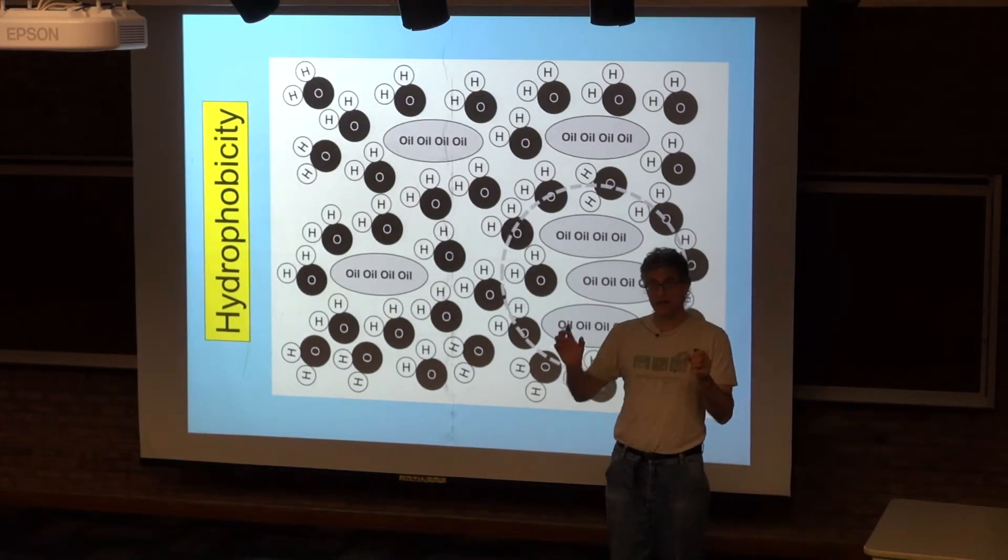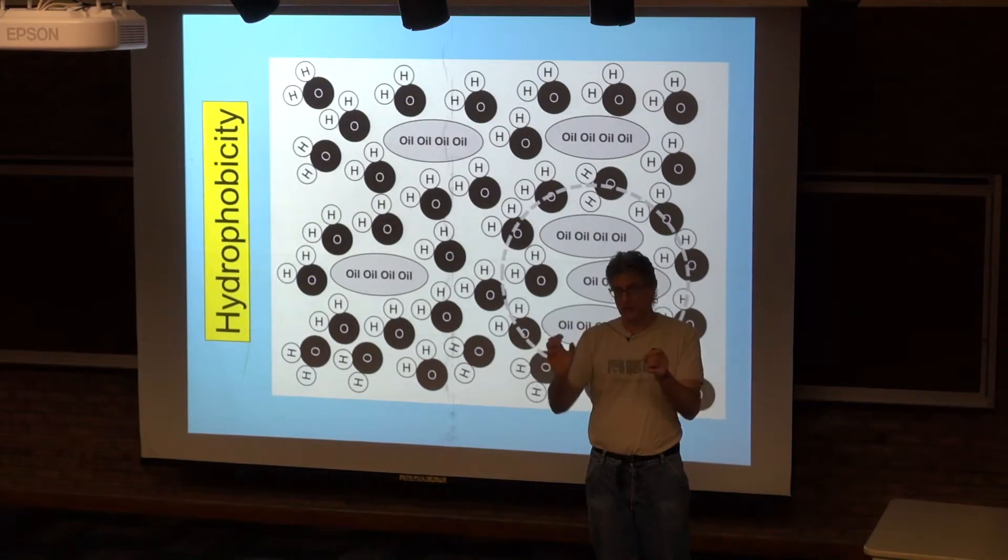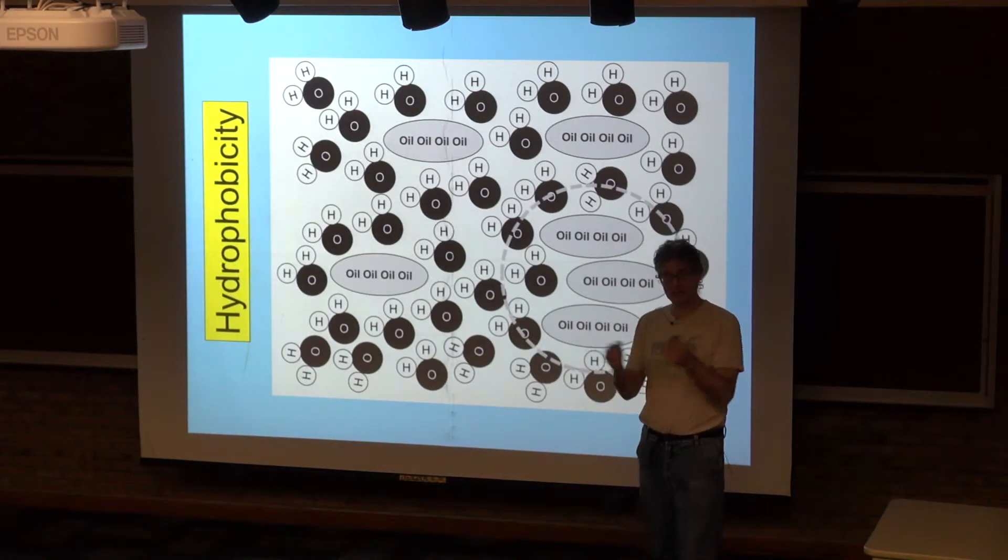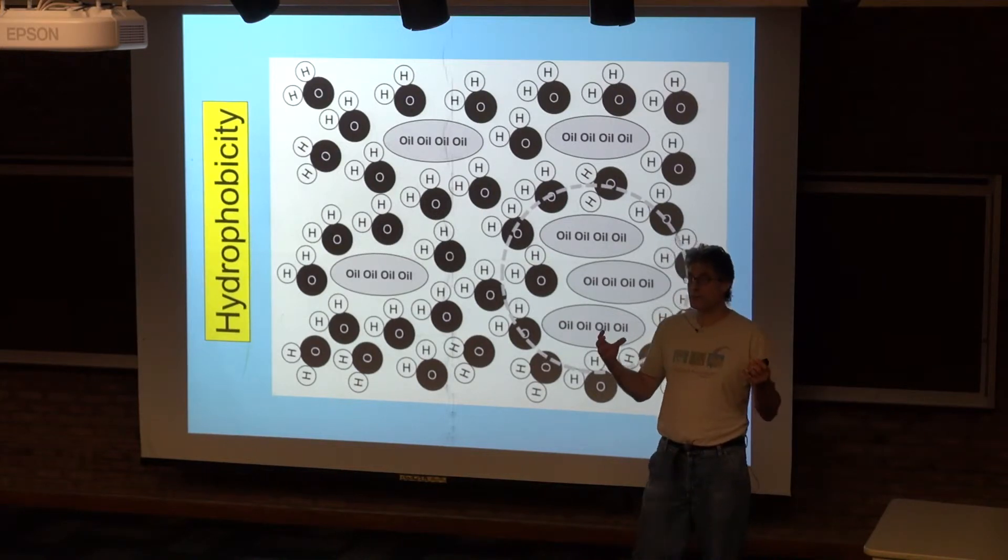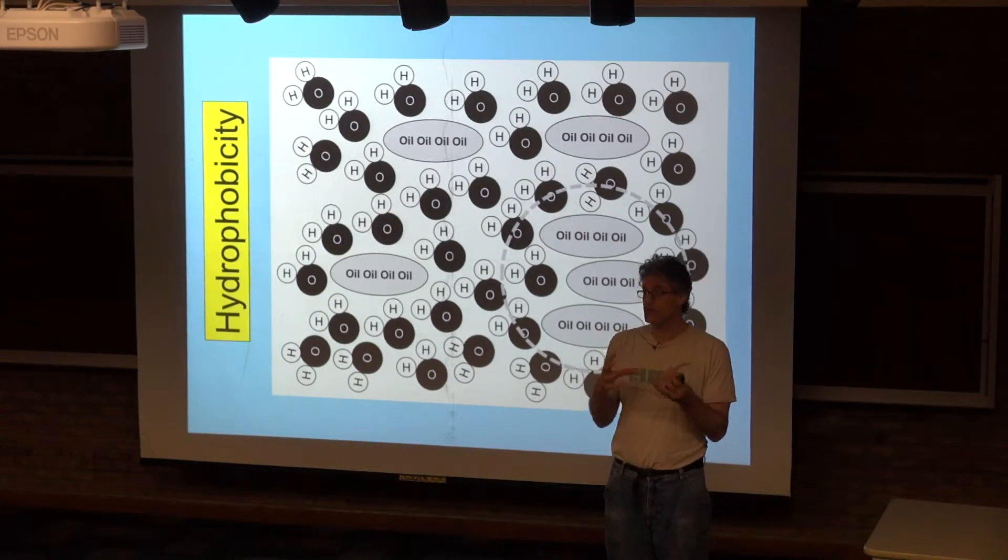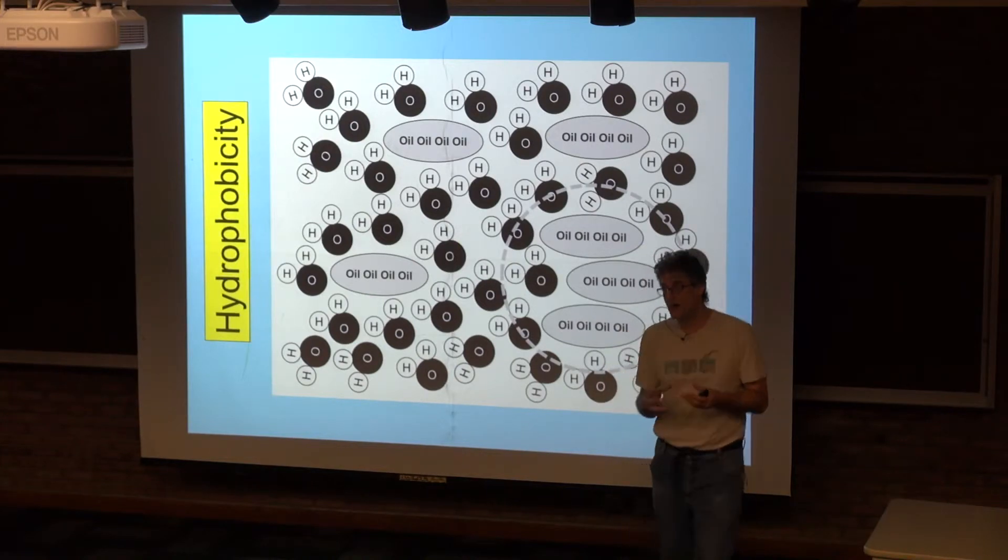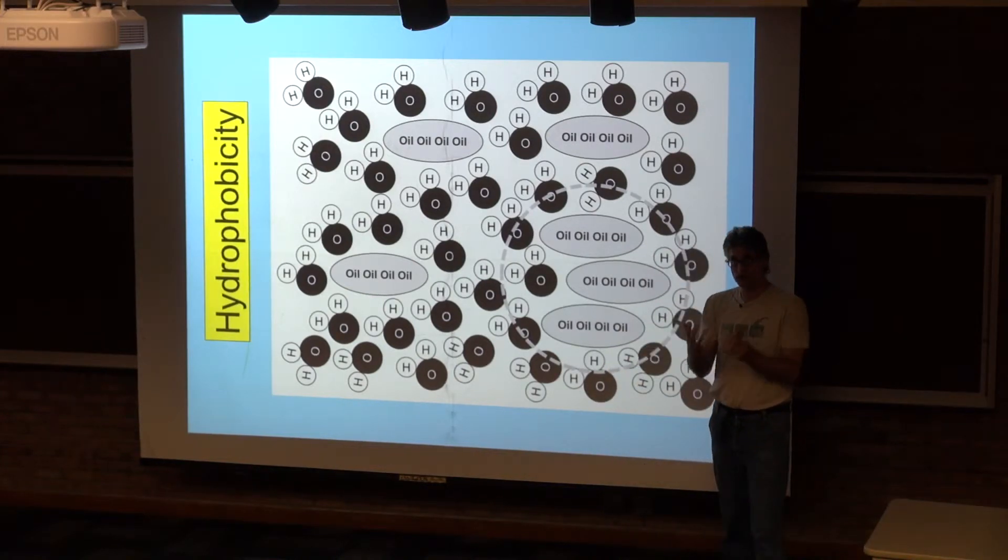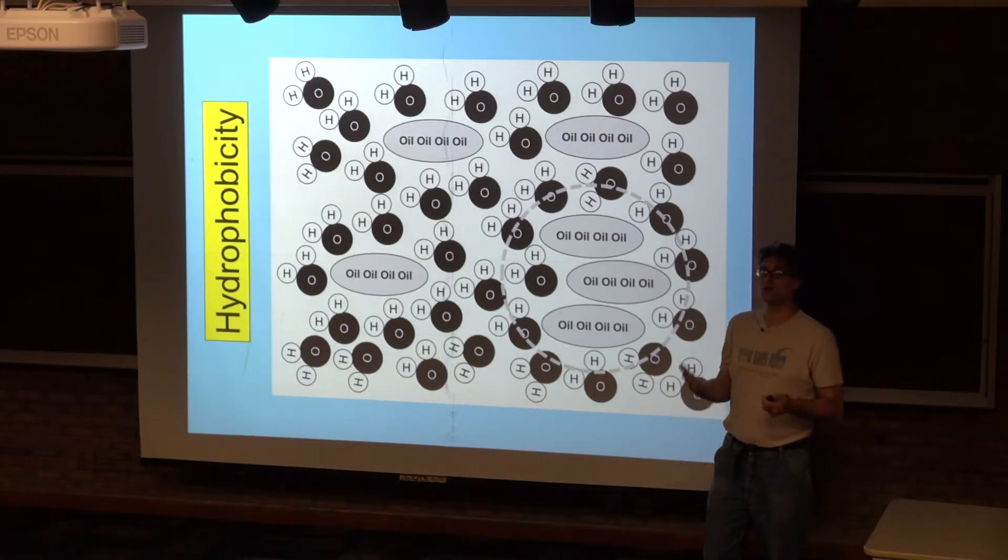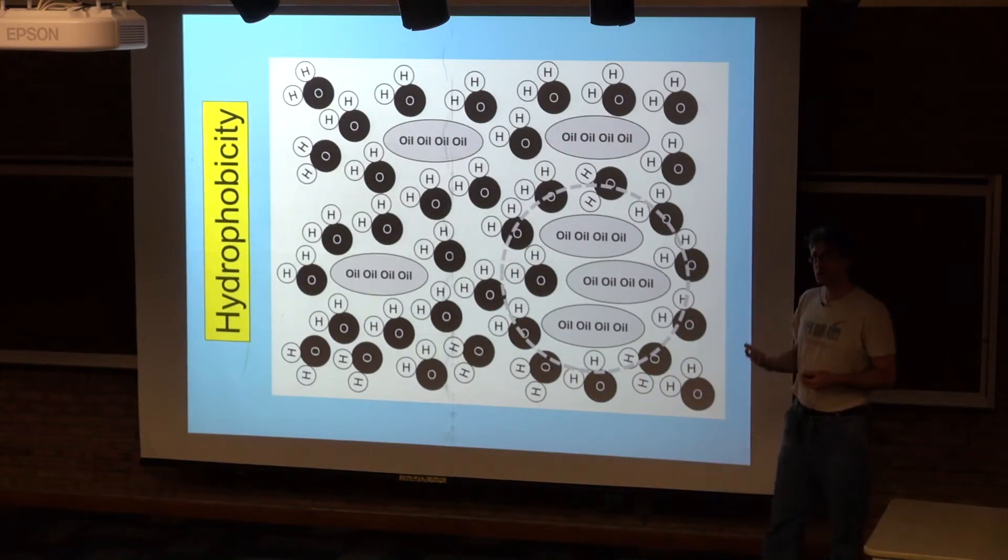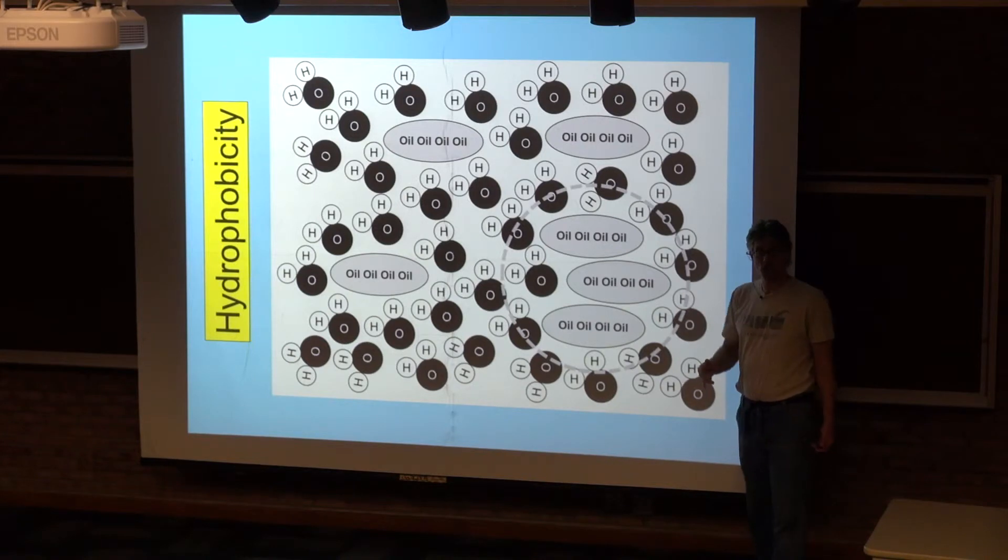But the mere fact that when you put the droplets in, they're droplets means they're not spreading out. They're trying to minimize their surface area. The droplets themselves, if given the opportunity, will coalesce into larger droplets. When they do that, the total surface area per volume is reduced further, and reducing that surface area reduces the amount of contact with water.